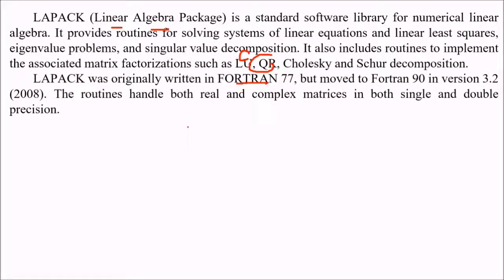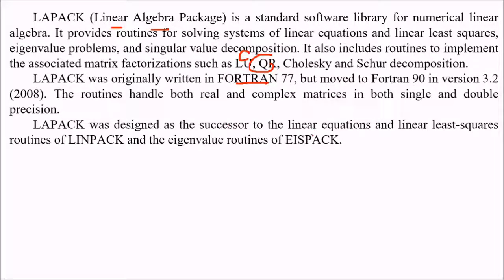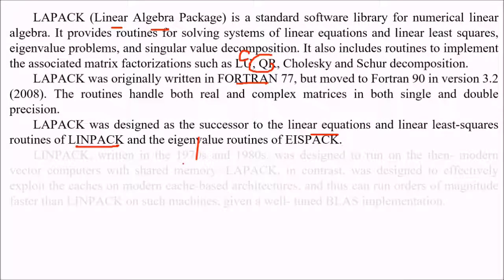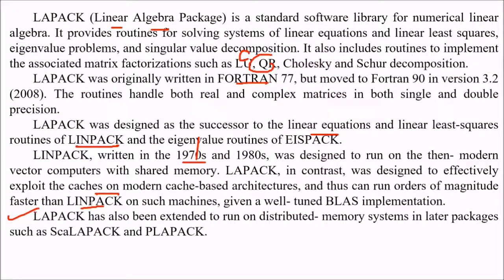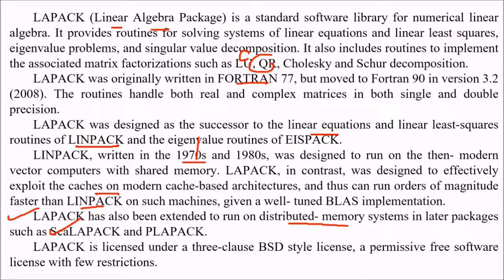LAPACK was originally written in Fortran 77 but moved to Fortran 90 in 2008. The routines handle both real and complex matrices in both single and double precision. LAPACK was designed as the successor to the linear equation and linear least squares routines of LINPACK and the eigenvalue routines of EISPACK. LINPACK, written in the 1970s, was designed to run on then-modern vector computers with shared memory. LAPACK in contrast was designed to effectively exploit the caches on modern cache-based architectures, and thus can run orders of magnitude faster than LINPACK on such machines given a well-tuned BLAS implementation. LAPACK has also been extended to run on distributed memory systems in later packages called ScaLAPACK and PLAPACK. LAPACK is licensed under a three-clause BSD-style license, a permissive free software license with few restrictions.